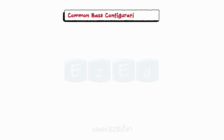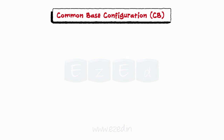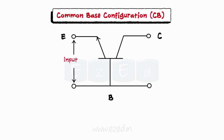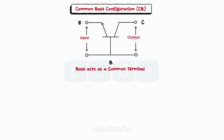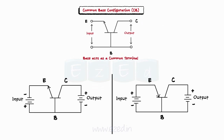In the common base configuration, we apply the input between the emitter and the base, and we measure the output between the collector and the base. Thus the base acts as a common terminal between the input and the output. The biasing is carried out as shown when we apply the common base configuration with NPN or PNP transistor.